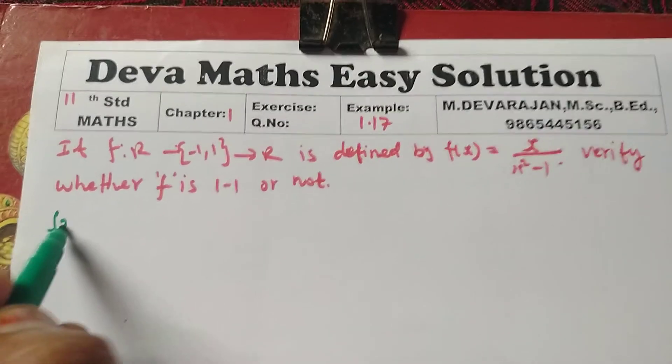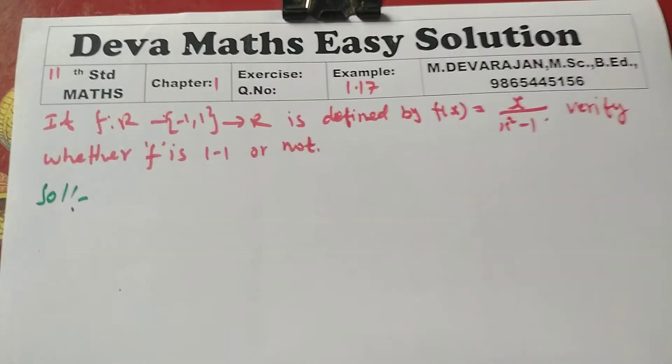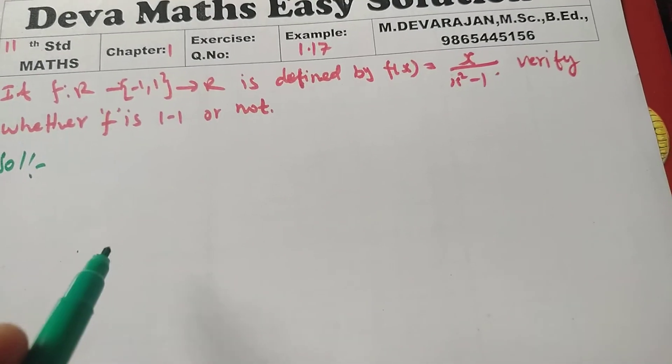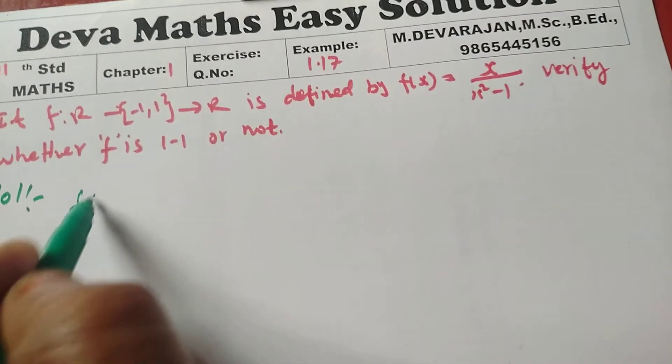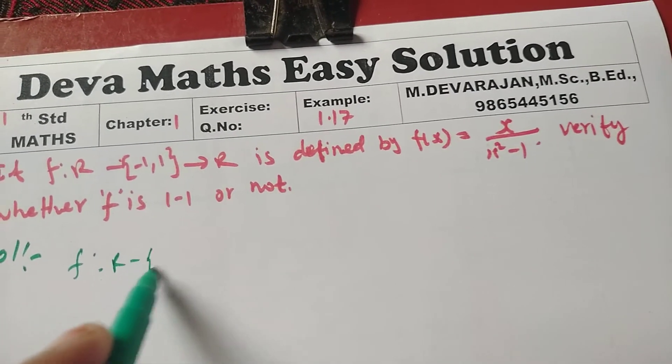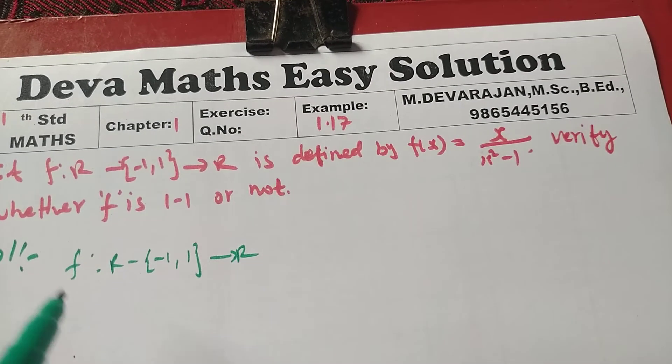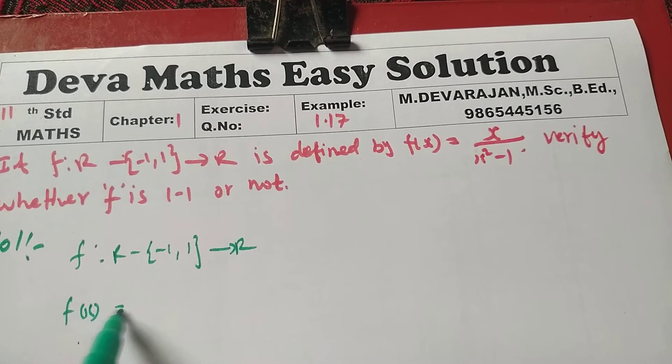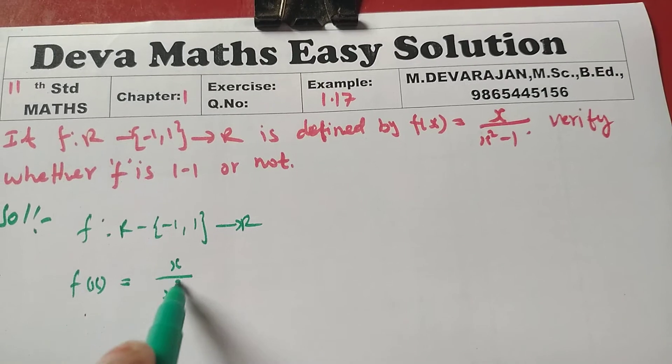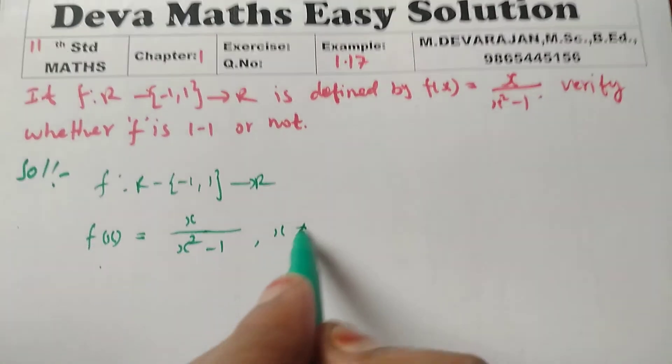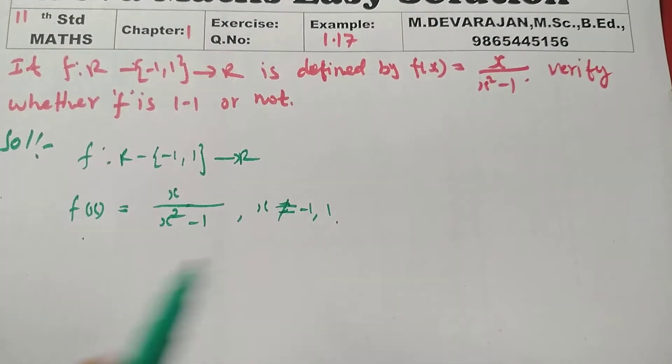Given: verify 1-1. First, the relation f from R minus {-1, 1} to R, f(x) = x/(x² - 1), where x ≠ -1, 1.